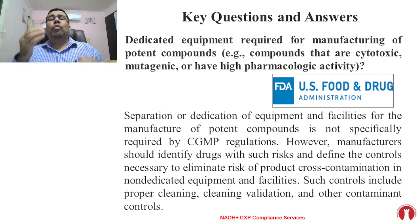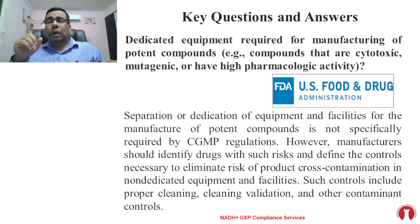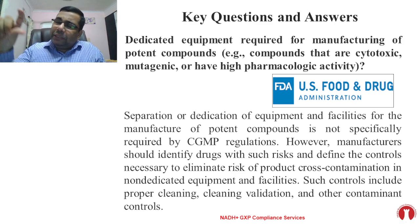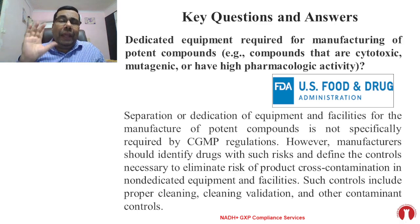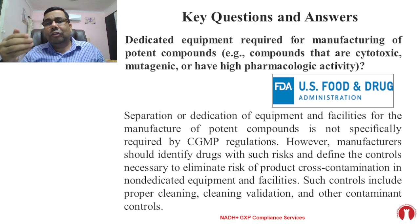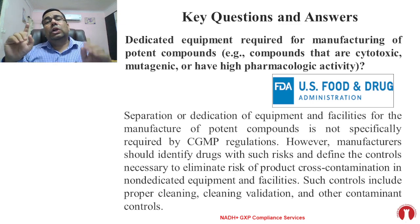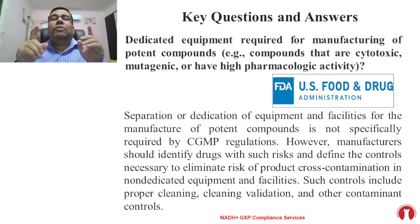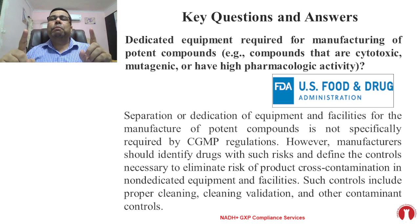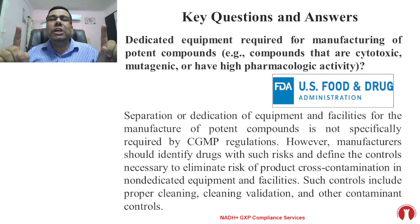Today's first question is whether dedicated equipment is required for manufacturing of potent compounds. The answer is given by the US FDA — I have copy-pasted the answer directly from FDA expectations. FDA expects that separation or dedication of facilities and equipment for the manufacture of potent compounds is not specifically required by CGMP regulations.